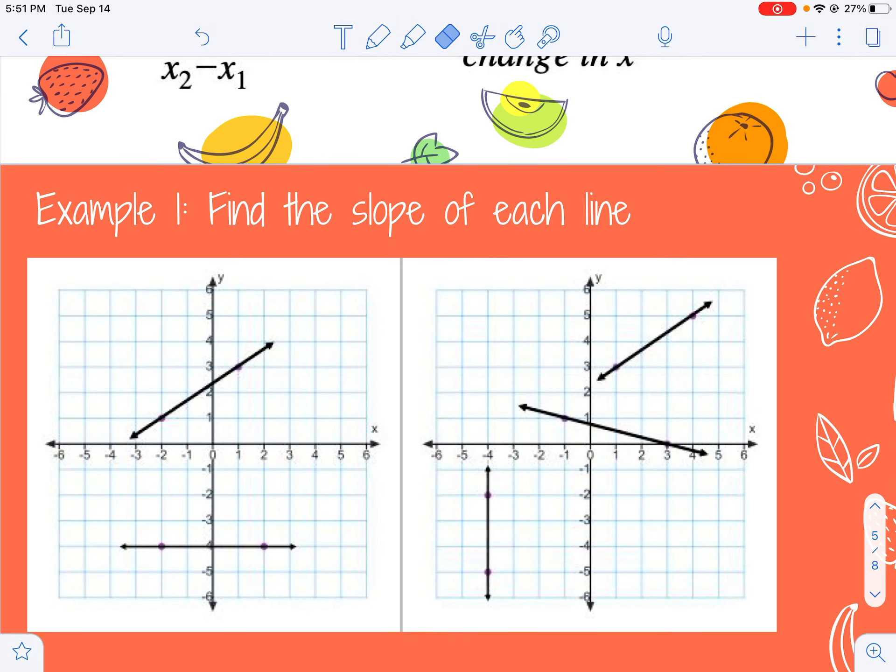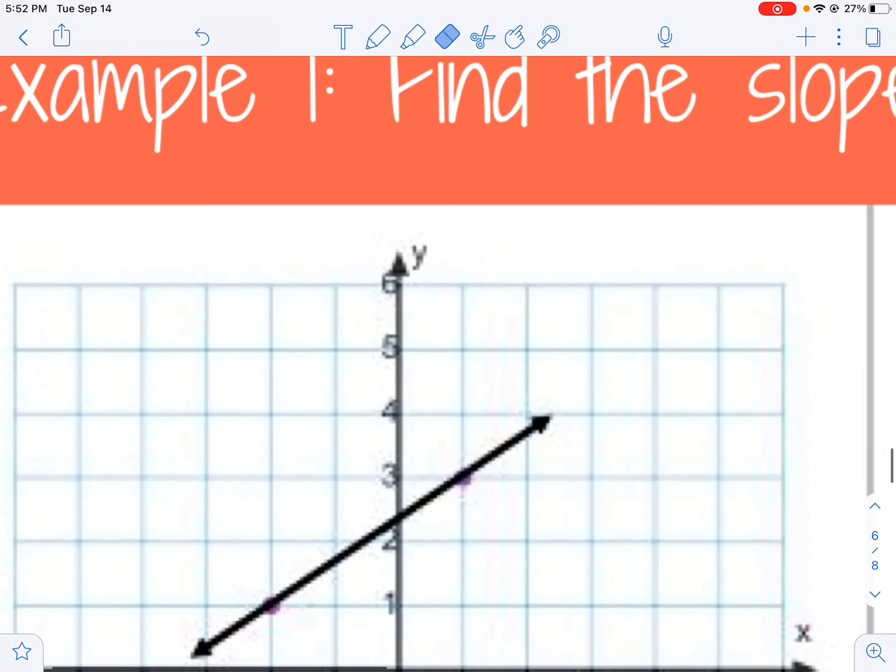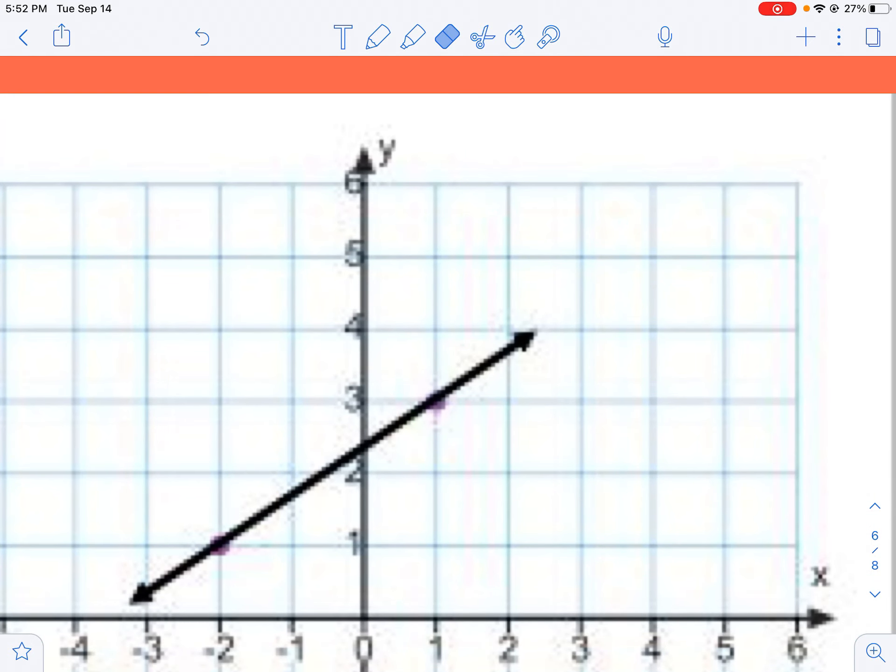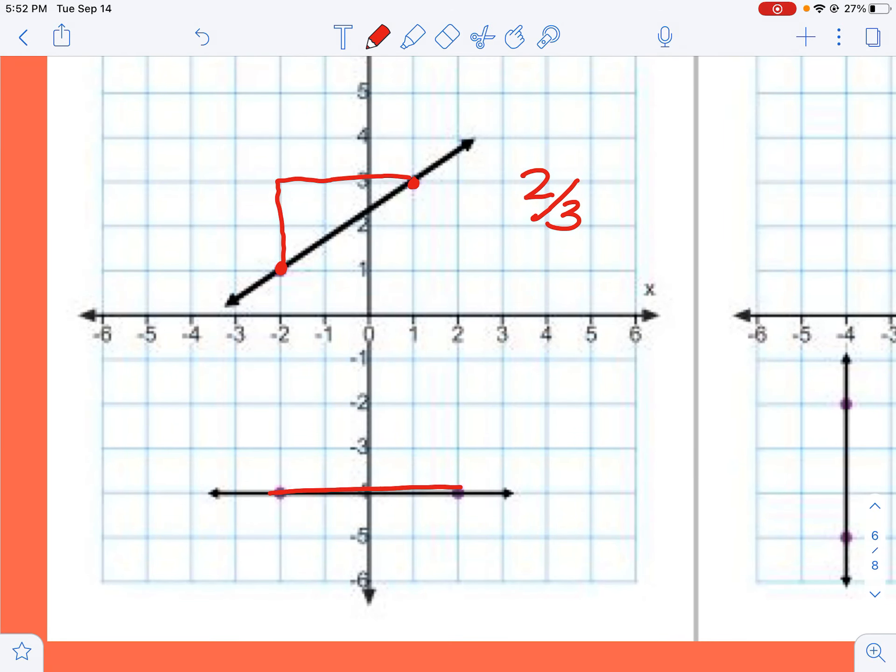So we're going to practice finding the slope given lines and then we'll practice given some points. I'm going to find a point that crosses, and when I have a graph like this, the easiest thing to do is just count. I'm going to go up 2, over 1, 2, 3.